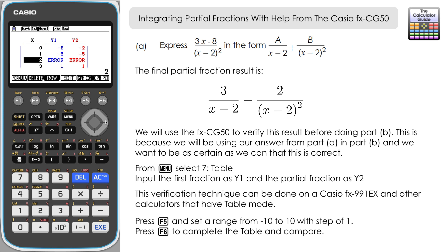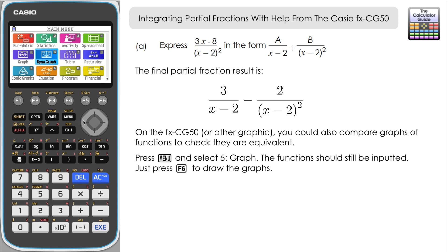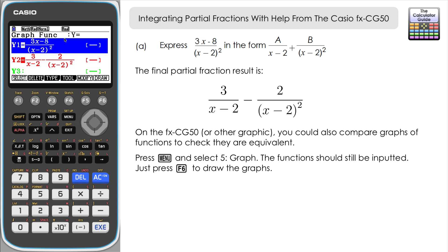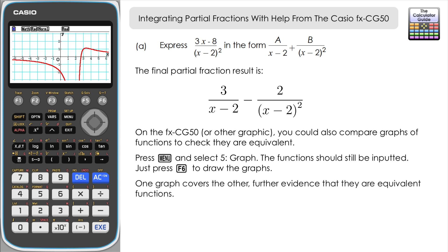Note that at x = 2 we get an error, since x = 2 would give 0 in the denominator. There's also a second visual way to check: going to menu then graph mode (5), our two functions Y1 and Y2 are still stored. Pressing draw (F6) shows the blue graph drawn first, with the red graph superimposed exactly on top — confirming it's the same function. That's enough evidence to proceed to part B.